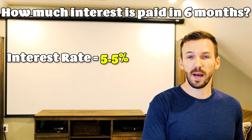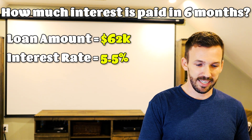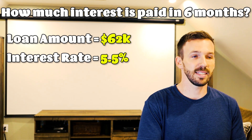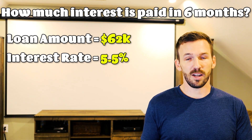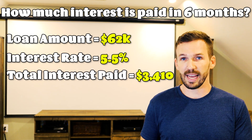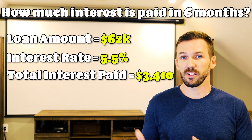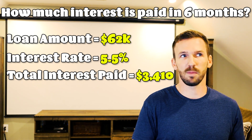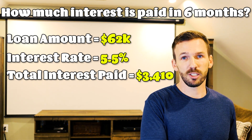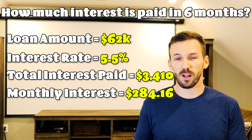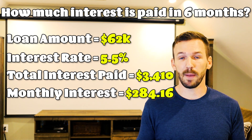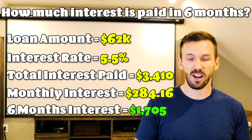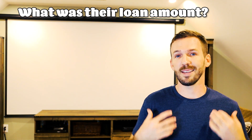Question two: a borrower has an interest rate of 5.5% and a loan amount of $62,000. How much interest will they pay in six months? You still answer it the same way. $62,000 times 5.5% gives you $3,410 of annual interest. You can either divide by two to get six months, or divide by 12 to get $284.16 per month, then multiply by six to get $1,705 of interest in six months.